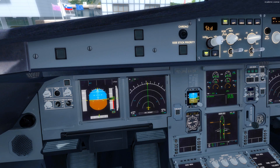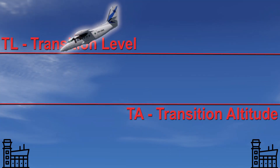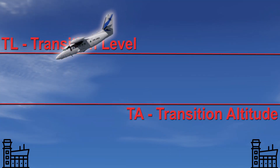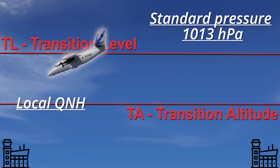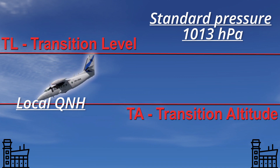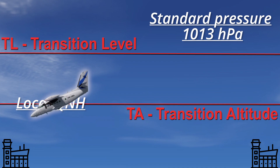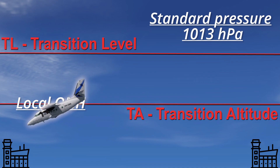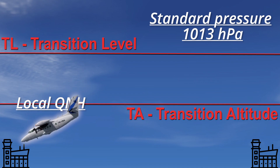This QNE pressure setting will show us the flight level measured from the standard pressure as mentioned. The same but vice versa applies when we are descending and passing the transition level — as we cross it, we switch from the QNE pressure setting back to the local QNH.